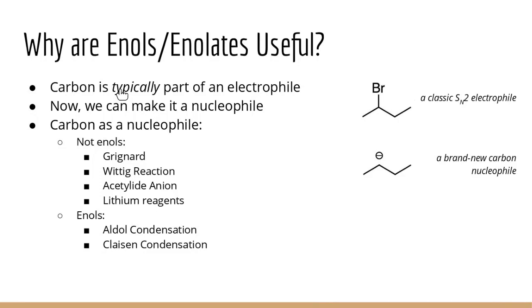Enols and enolates are useful because carbon is typically an electrophile, but we can now make it a nucleophile. We've seen this with Grignard, Wittig, acetylide anions from terminal alkynes, and organolithium reagents. Essentially, enolates expand the ways we can form carbon-carbon bonds. Two major reactions using this are the aldol condensation and the Claisen condensation.